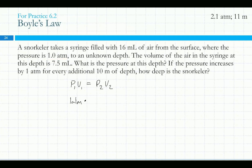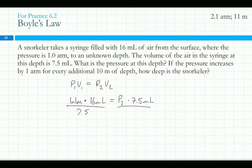Pro tip: do we need to convert from milliliters into liters? Not for these gas laws, because I've got volume on both sides, and as long as I put in milliliters on both sides, I'm going to end up with volume divided by volume, and so that cancels out. 16 milliliters at the surface. We want to know the pressure at the bottom, and this is 7.5 milliliters. So dividing by 7.5, it's going to be 2.133 repeating atmospheres equals P2.